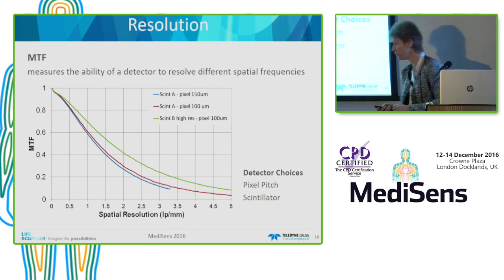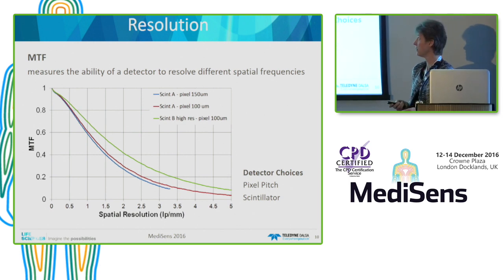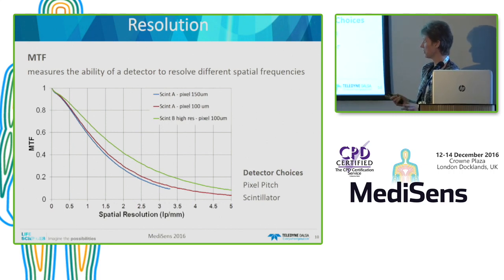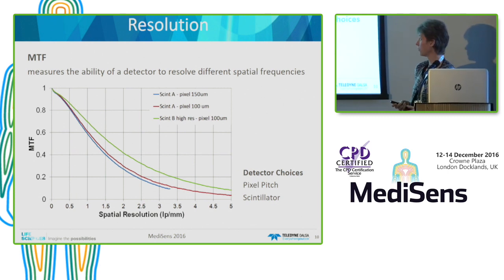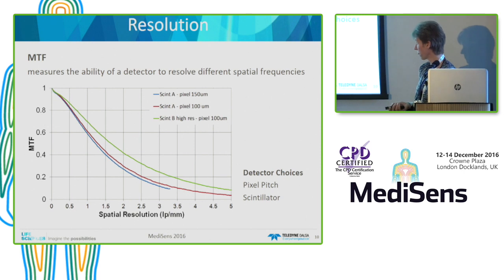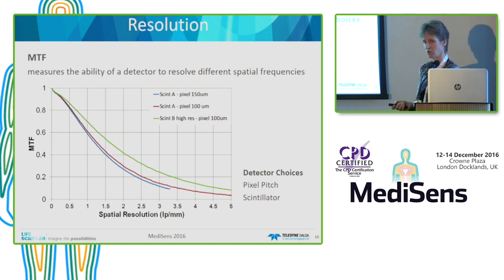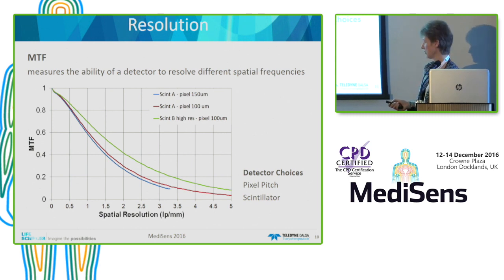Coming to resolution, MTF — the Modulation Transfer Function — measures the ability of a detector to resolve different spatial frequencies. What you see here is a difference between two detector configurations: a detector with a standard scintillator at 100 micron pixel, a detector with a standard scintillator at 150 micron pixel, and a detector with a high resolution scintillator. The high resolution scintillator clearly improves resolution considerably. There is not a big difference between the two pixel sizes — only that the Nyquist frequency is at a different point, and the curves are plotted up to the Nyquist frequency.